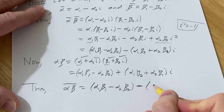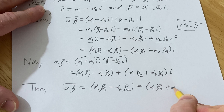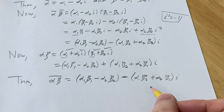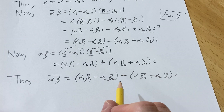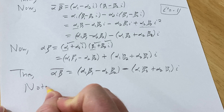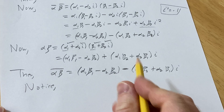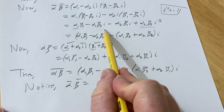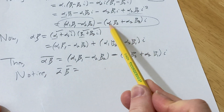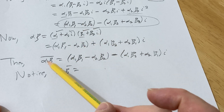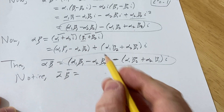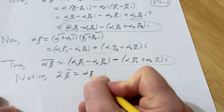So the conjugate of alpha·beta is (alpha₁·beta₁ minus alpha₂·beta₂) minus (alpha₁·beta₂ plus alpha₂·beta₁)·i. Notice we're done — the conjugate of alpha times the conjugate of beta, which we computed earlier, is exactly the same as this result. They are identical. So the two expressions are equal, which is exactly what we had to prove.